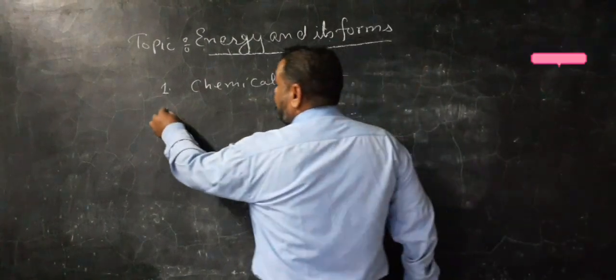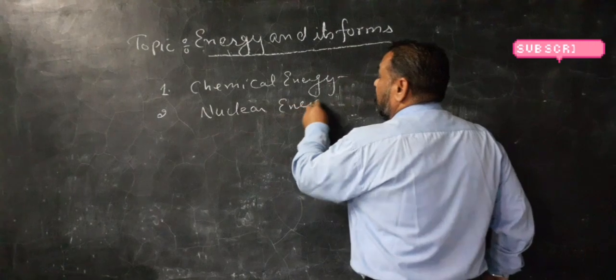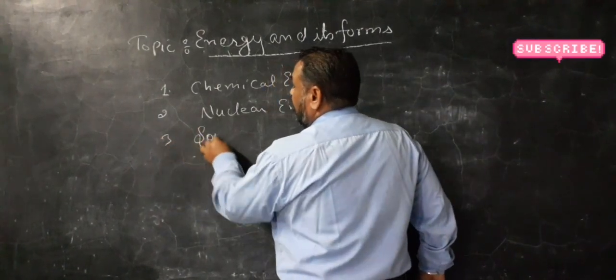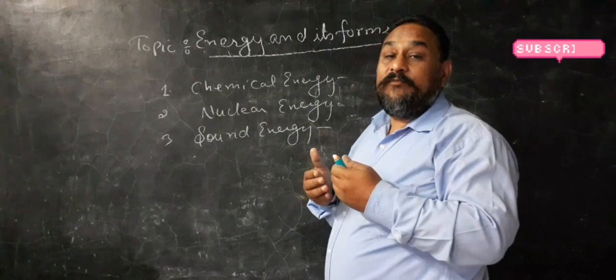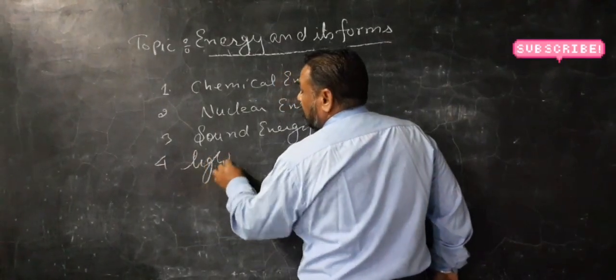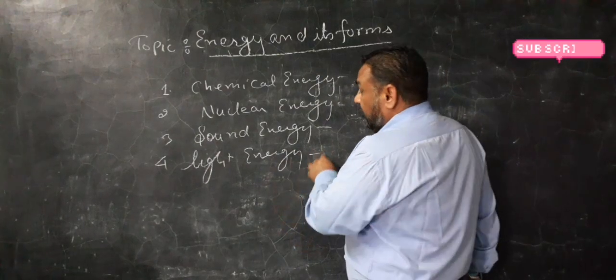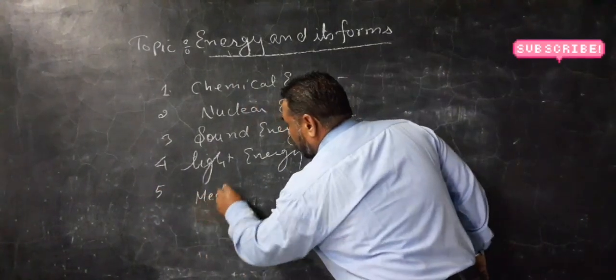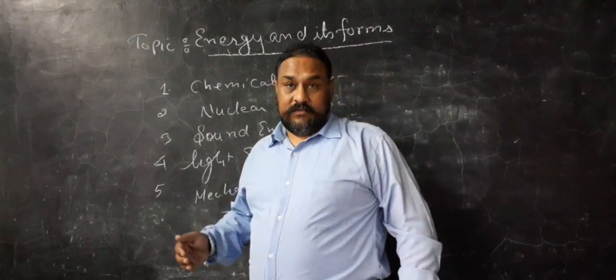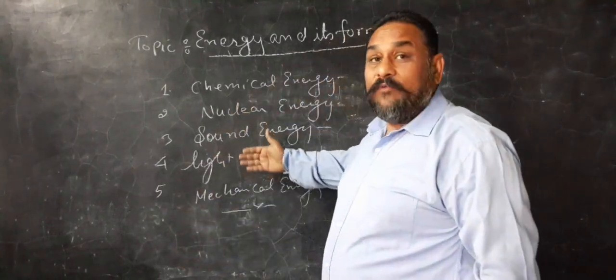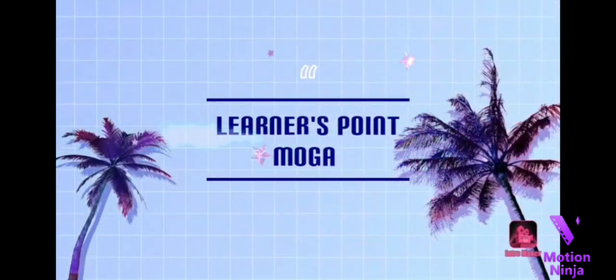Second, nuclear energy. Sound energy - if you clap, you will produce a sound. That will form sound energy. Light energy - whenever you switch on the bulb, it will produce light. You can say it is light energy. Next, mechanical energy, and many more energies are there. So these are a few types or forms of energies which I have discussed. Thank you.